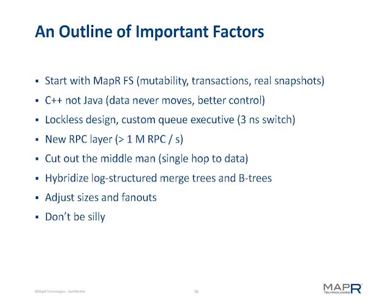Starting with the MapR file system was natural for us and provided huge advantages. We started with C++, not Java. The data never moves inadvertently — we have absolute control over positioning, cache coherency, and alignments. We have a fully lockless design at the low levels, so once a data element hits a queue on its way to disk, there are no more locks. It's bound to one core and just slides through very fast. That's where we have the custom queue executor with very fast context switch time, locked to a particular core and particular wired pieces of RAM.